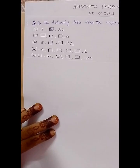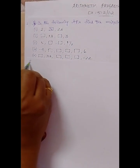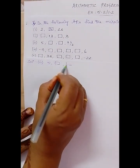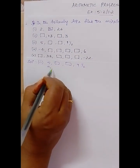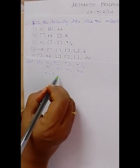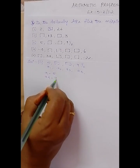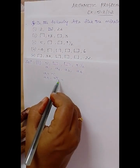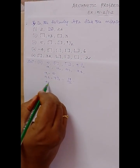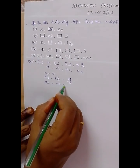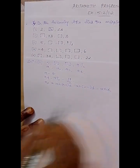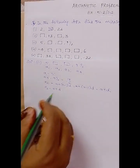The third problem is: 5, _, _, 9½. We have a1, a2, a3, a4. a1 = a = 5. a4 is given as 9½. Converting to an improper fraction: 9×2 = 18, 18 + 1 = 19, so a4 = 19/2. We need to find a2 = a + d and a3 = a + 2d, but first we need the value of d.